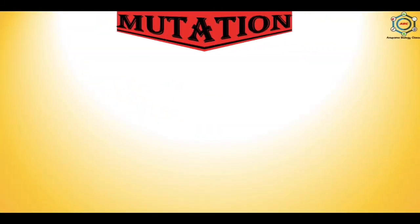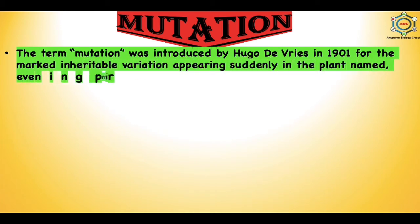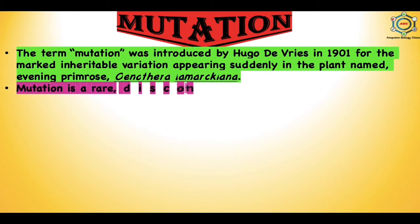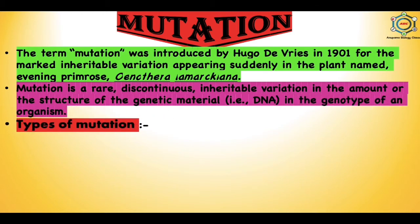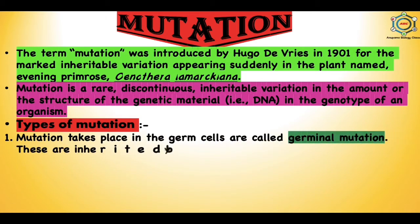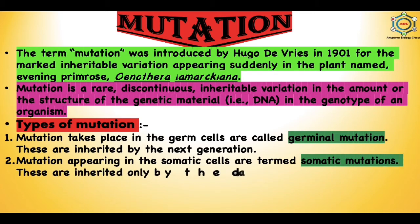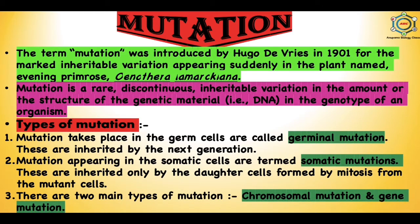The second main topic is mutation. The term mutation was introduced by Hugo de Vries in 1901 for marked inheritable variations appearing suddenly in the plant evening primrose (Oenothera lamarckiana). Mutation is a rare, discontinuous, inheritable variation in the amount or structure of genetic material (DNA) in the genotype of an organism. Mutations in germ cells are called germinal mutations and are inherited by the next generation; mutations in somatic cells are termed somatic mutations, inherited only by daughter cells formed by mitosis. The two main types are chromosomal mutation and gene mutation.